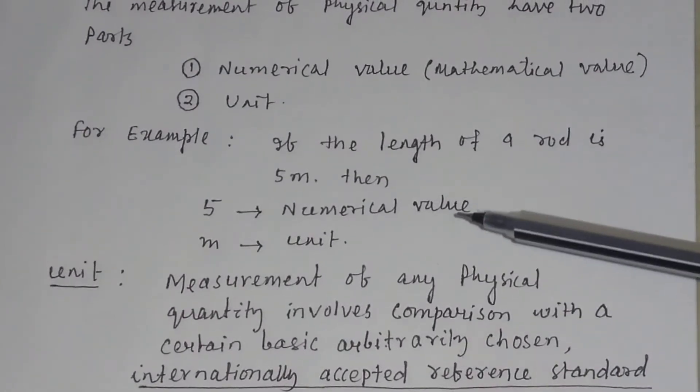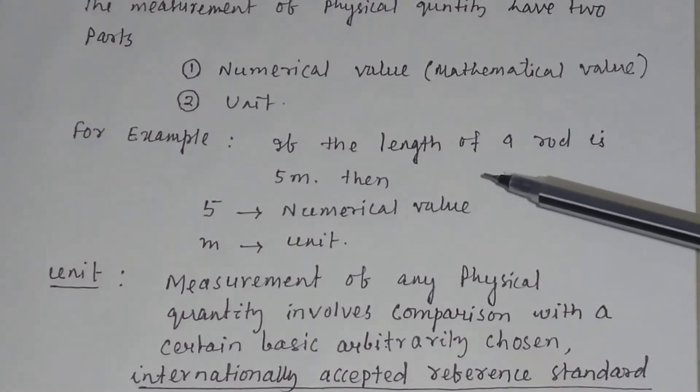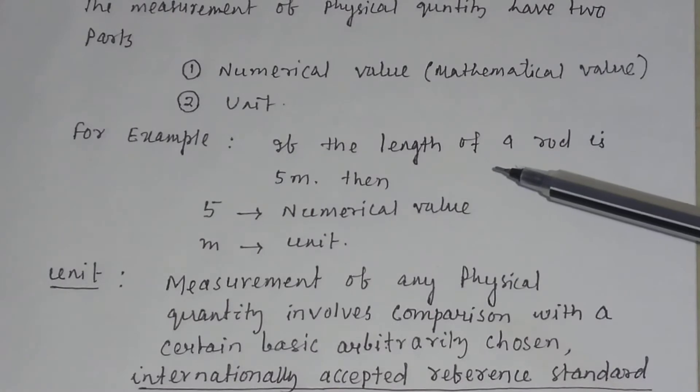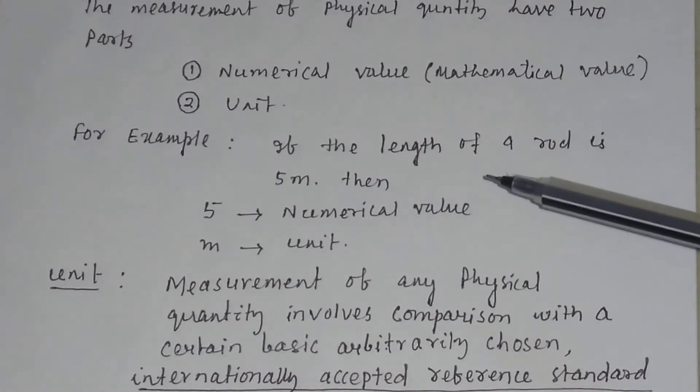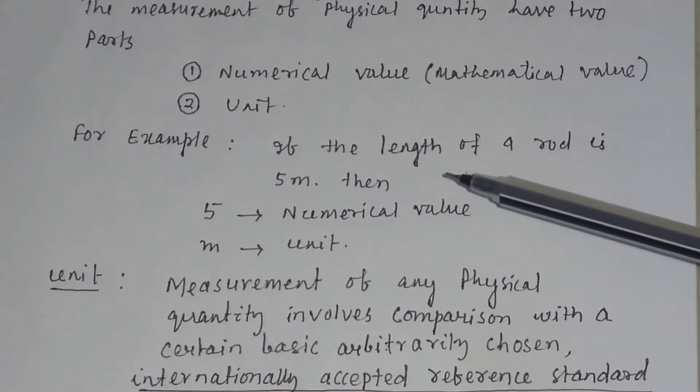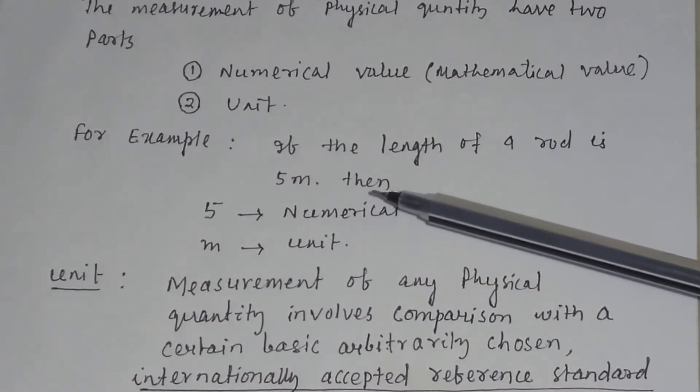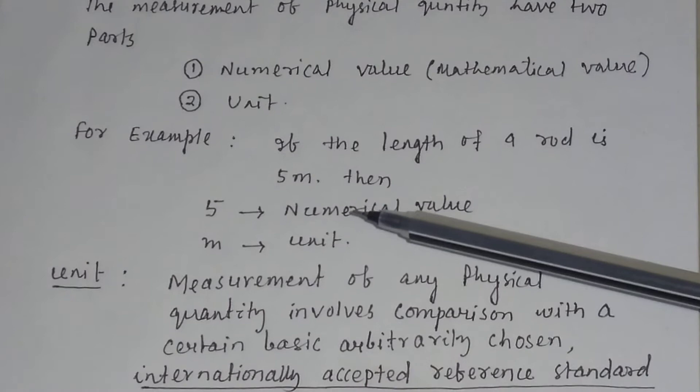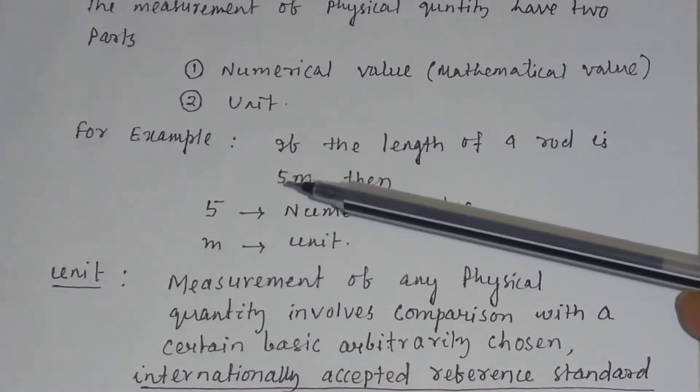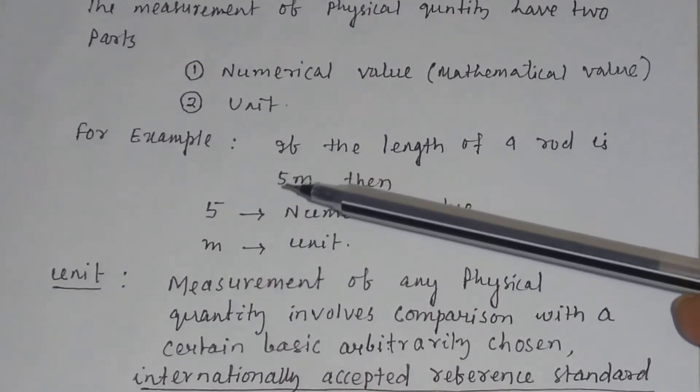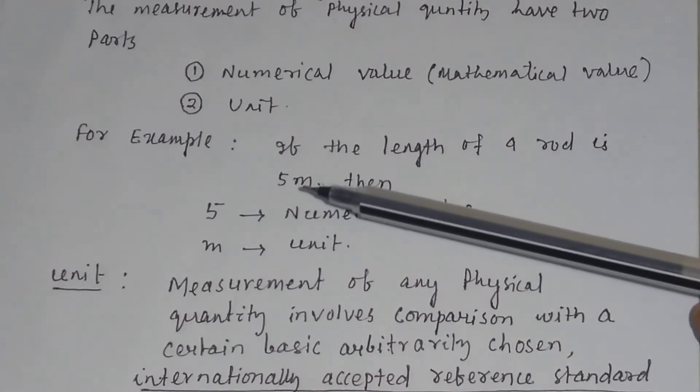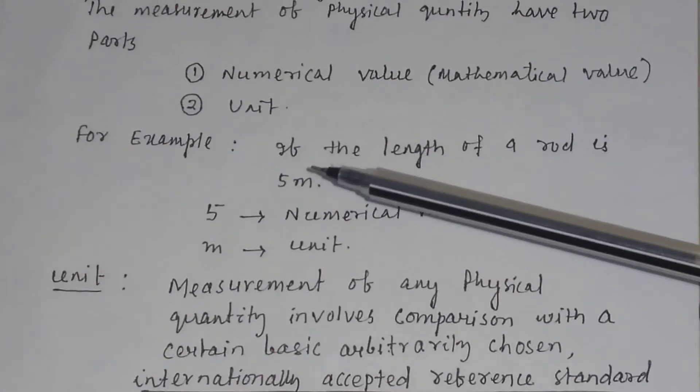For example, if we measure the length of a rod by means of a meter scale, and suppose the length of the rod is 5 meter, then here 5 is the mathematical value or numerical value, and meter is called the unit.